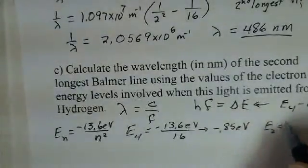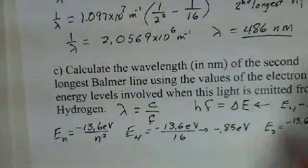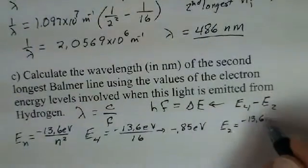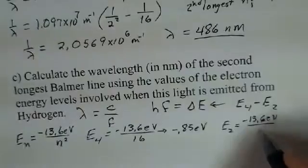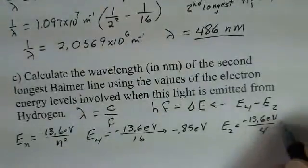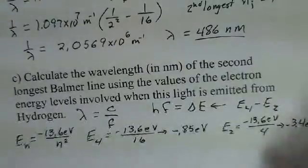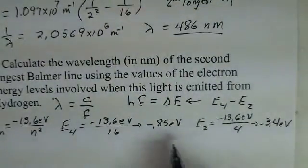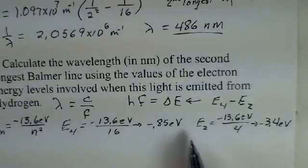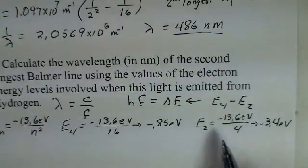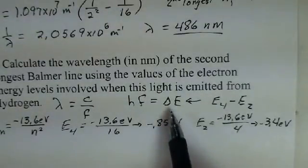And we get minus 0.85 electron volts. And then E2, a little easier. Minus 13.6 electron volts divided by 2 squared, that's a 4. And we get minus 3.4 electron volts. So we have the two energy values in the Bohr model of the hydrogen atom.